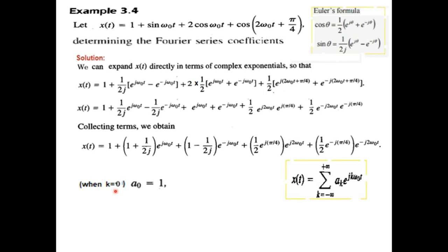So when k is 0, A0 is equal to 1. When k is 1, A1 is this term. And before writing the other term or solving this one, we got to remember this, that 1 over j is equal to minus j. And I have explained how it is. So you can just have a look at it.